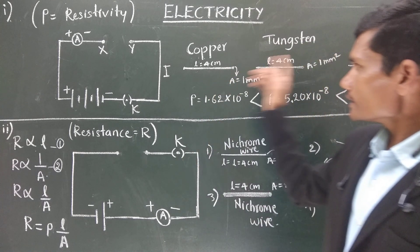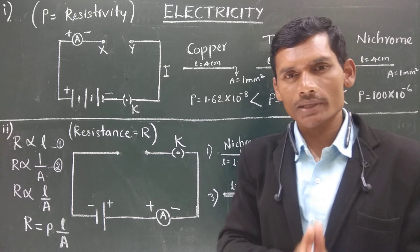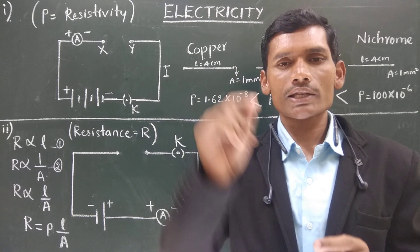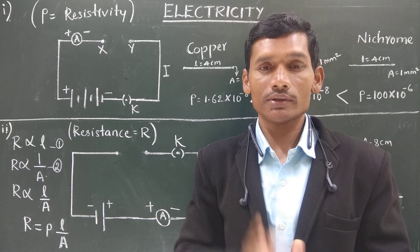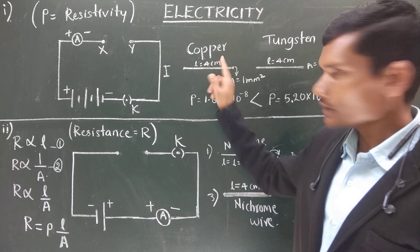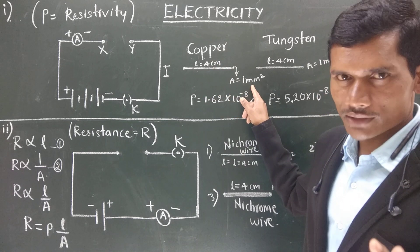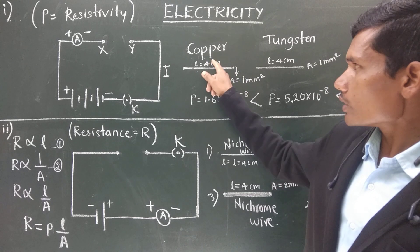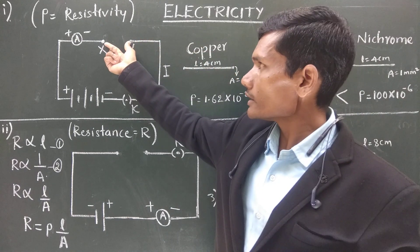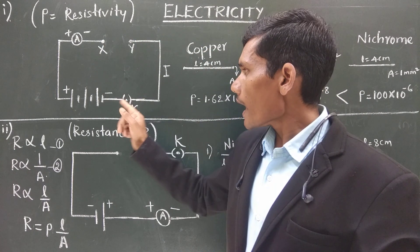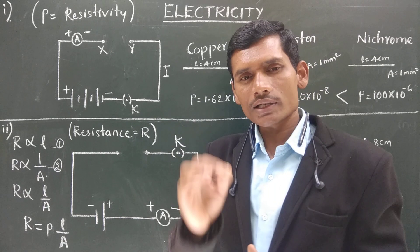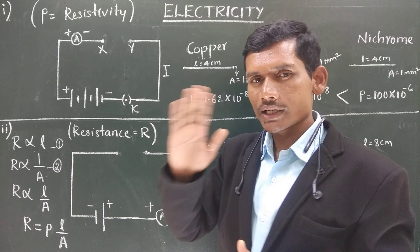Before inserting the materials, let us understand what dimensions mean. Dimensions refer to the length of the material and the area of cross-section. Here, the copper wire has a length of 4 centimeters and an area of cross-section of 1 millimeter square. We insert this copper wire into gap XY, close the plug key, and measure the current on the ammeter, noting down its reading.